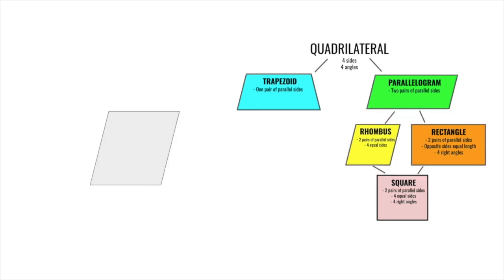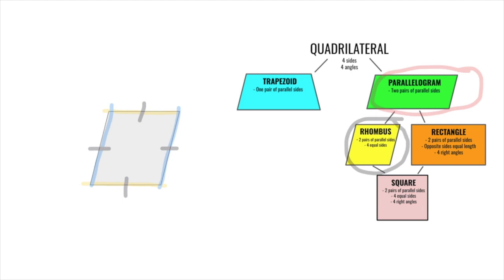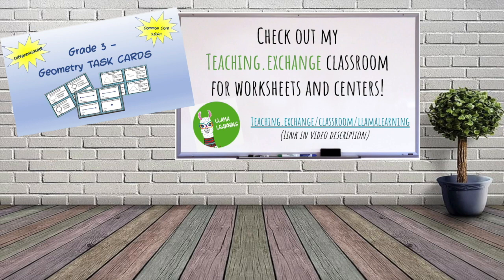One more practice. Looking for parallel sides: this side runs the same way as this side — that's one set — and this side runs the same as this side — two sets. So we have a parallelogram. Checking for four equal sides: one, two, three, four — all equal, so it is a rhombus. Looking for right angles: this shape does not have right angles, so it is not a rectangle and not a square. We can use parallelogram and rhombus to describe this shape.